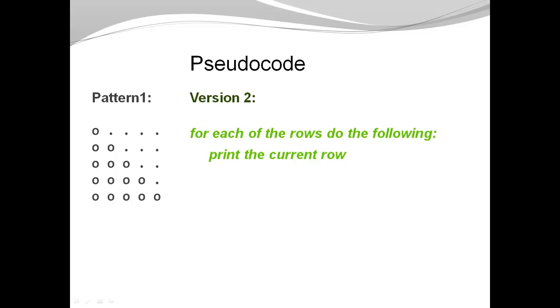My version 2 says for each of the rows do the following, print the current row. So I no longer have the task of printing the whole pattern. Now I have the task of printing a row over and over again until all the rows are printed. The first line for each of the rows do the following. It's very nicely the pattern of a for loop. So I'm making a check here. We know how to write a for loop.